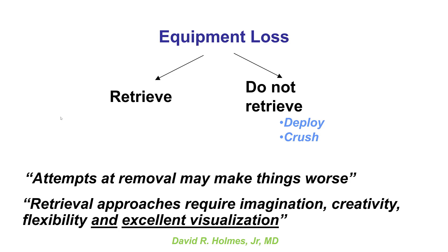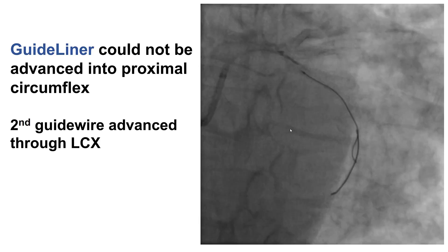When something like this happens and a piece of equipment finds itself in an unplanned location — something lost or entrapped, in this case a microcatheter tip — there are two ways to deal with it. One is to try to retrieve it. The other option is to not retrieve it, but instead try to get a wire around it, and if possible deploy a stent or otherwise cover that entrapped or lost device.